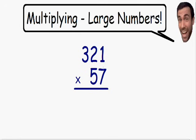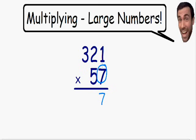We always start with the number on the bottom right. So we'll start with this number 7 and we need to multiply this number 7 with all of the numbers on top. We start with the number 1 — 7 multiplied by 1 is equal to 7. So in the first column we have the number 7. Now we need to multiply the 7 times the next number on top, times the number 2. 7 times 2 is equal to 14.